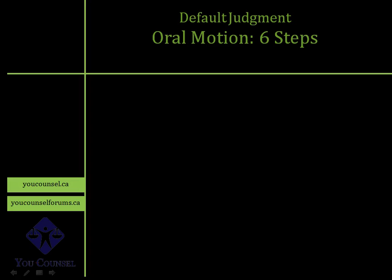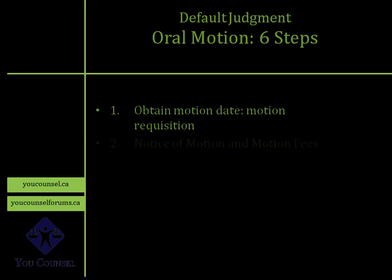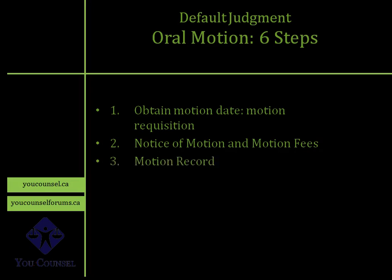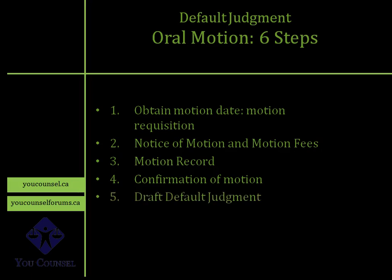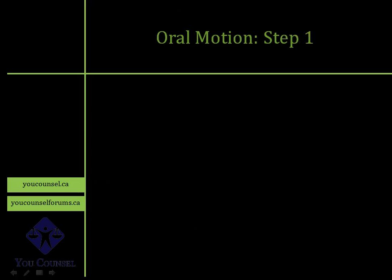This lecture primarily covers the oral motion. There are six basic steps to keep in mind. Step one: obtain a motion date prior to attending the motion through a motion requisition. Step two: prepare a notice of motion, provide court fees, and submit both to the court. Step three: prepare your motion record. Step four: confirm your motion a few days before it is to be heard. Step five: draft your default judgment for the judge. Step six: attend court and obtain your default judgment.